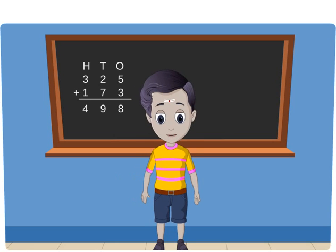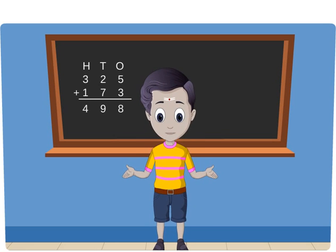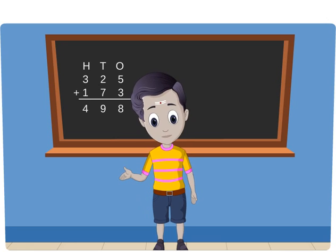Let us learn addition of four-digit numbers without regrouping. Add 2324 and 3452.